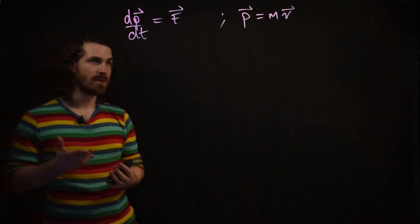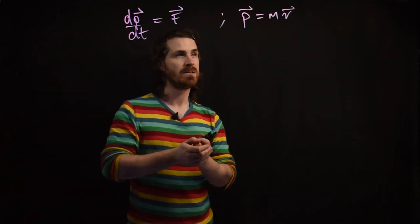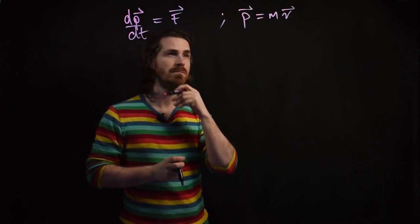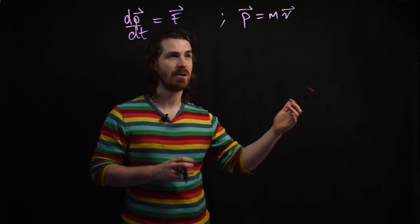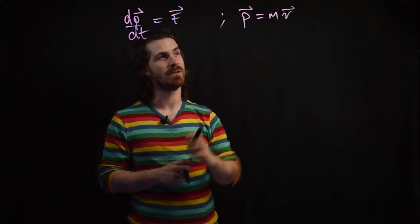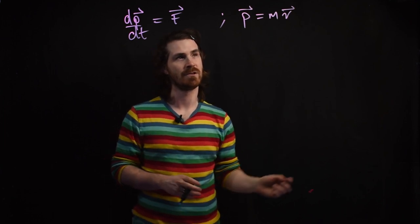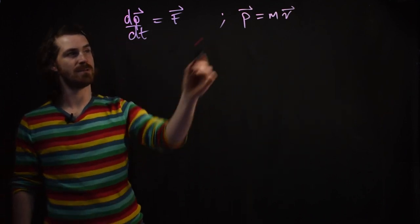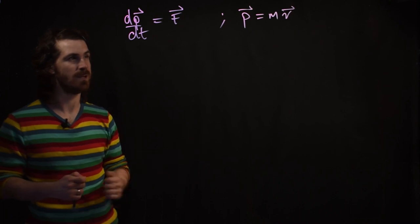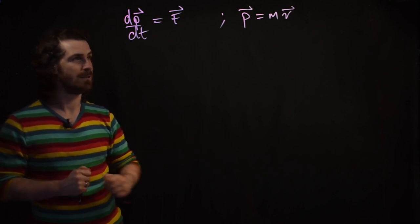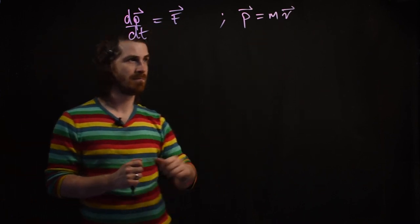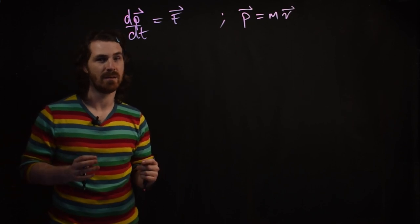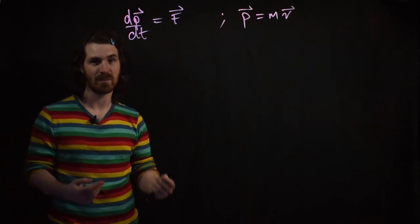In classical mechanics, if the momentum gets large, this implies that the velocity gets large, or vice versa. So let's think about what happens when the momentum tends to infinity — then this means the velocity must tend to infinity. But of course, we know in special relativity that we have a speed limit: it's the speed of light.